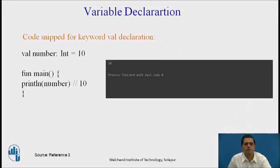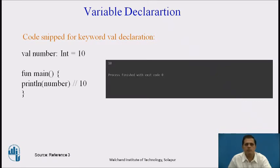Let us see a code snippet for the val keyword declaration. Here, val number: Int = 10. Val is the keyword, number is the variable name, the data type is integer, and 10 is the value assigned. In the main function I am printing the number using println. The output on the right-hand side shows that the value 10 is displayed.